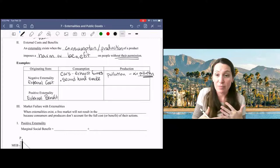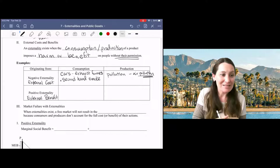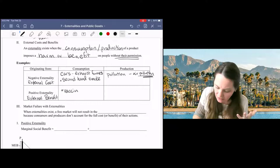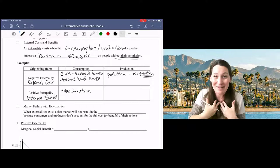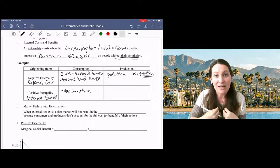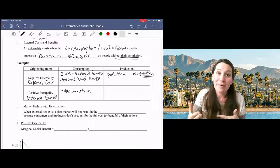But there are some cases in which we see positive externalities and the government is paying attention to those. So one really compelling example right now is vaccination. So vaccination carries with it a positive externality from consumption. If I get a COVID vaccine, then I am less likely to get COVID. That's the benefit to me, that's my incentive to get it. But because I am less likely to get COVID, it also means I'm less likely to spread COVID.